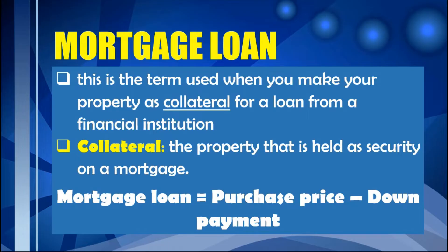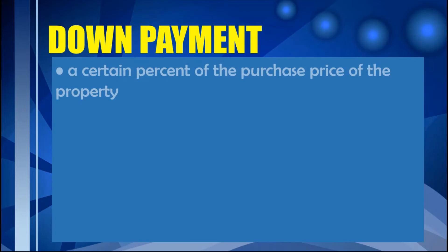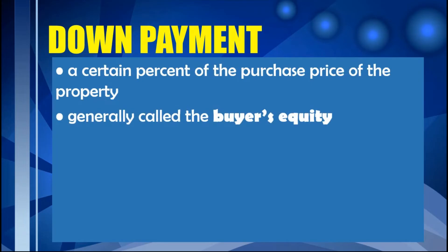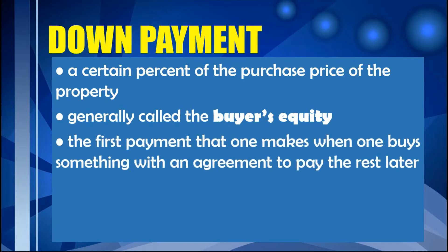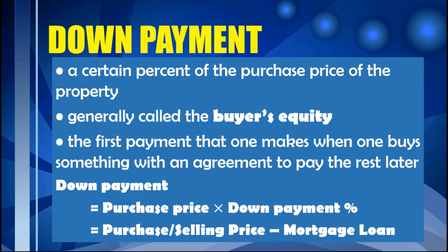To solve for the mortgage loan, we just have to get the difference between the cost of the house and the down payment. When we say down payment, it refers to a certain percent of the purchase price of the property, generally called the buyer's equity. It is the first payment made when buying something with an agreement to pay the rest later. To find the down payment, we multiply the purchase price by the down payment percent, or we can use purchase price minus the mortgage loan.